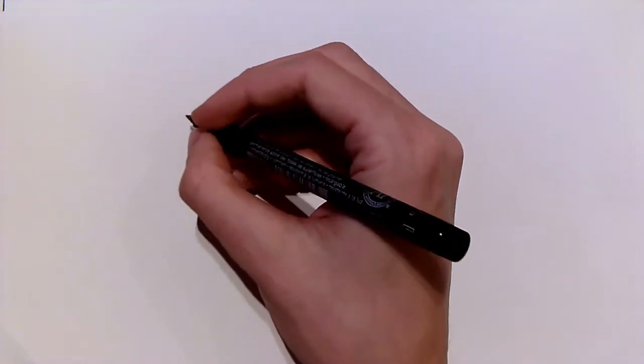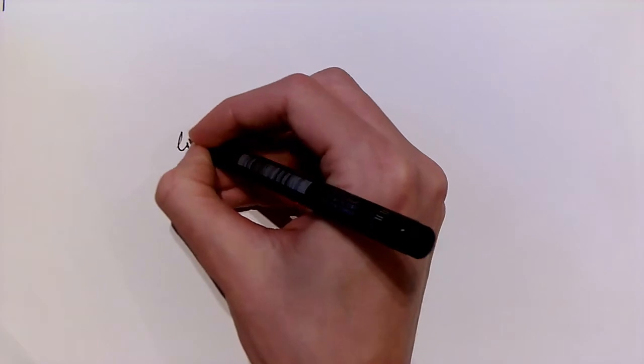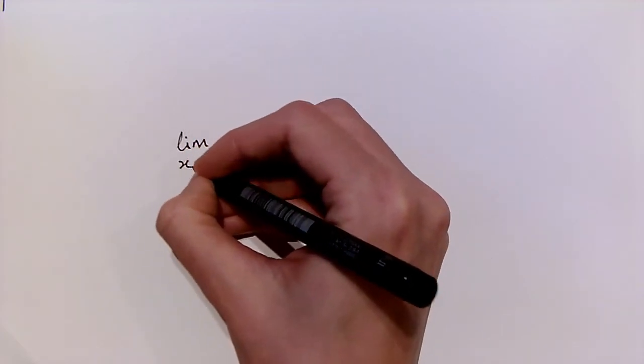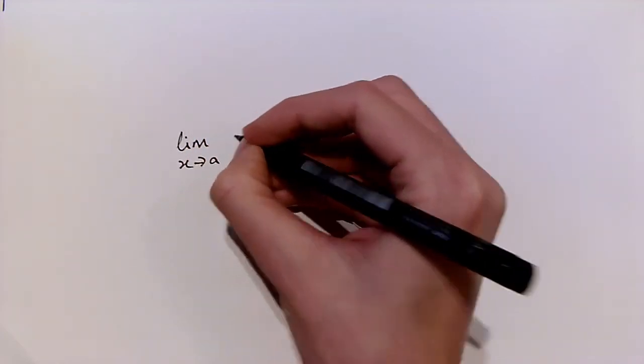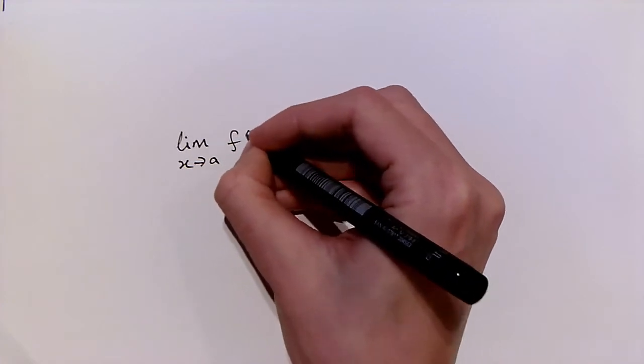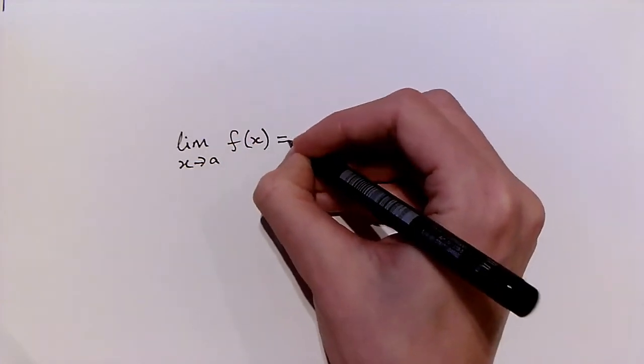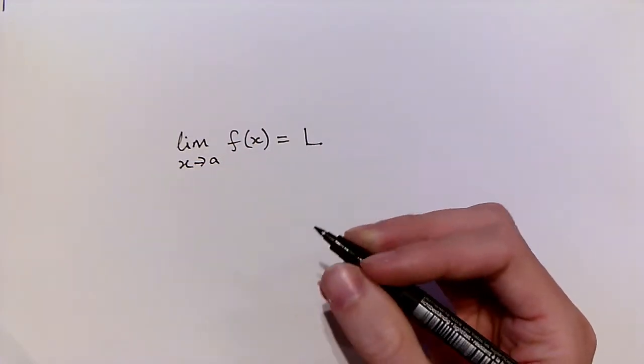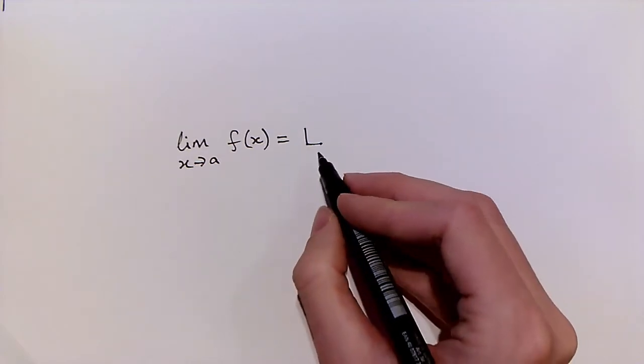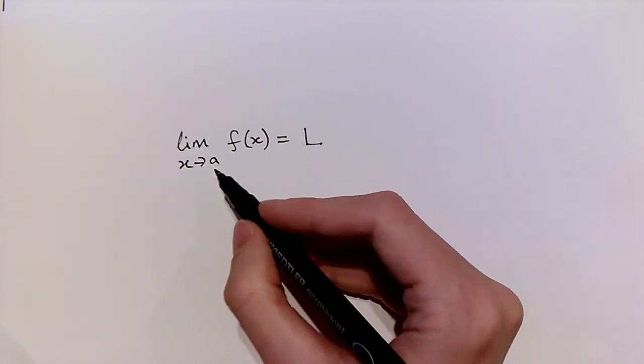You might already have some intuitive idea, perhaps from studying calculus in your first year, where you were told that the limit as x approaches a of some function f(x) is equal to l if f(x) gets close to l for x close to a.